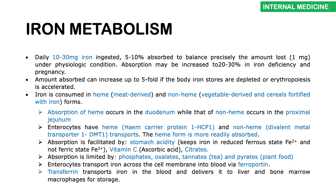Before going into further details, let's talk about iron metabolism. About 10 to 30 milligrams of iron are ingested per day, and about 5 to 10 percent of this is absorbed, with very little lost — about 1 milligram. Aside from females with menses, men have virtually no way of excreting iron. Absorption increases to about 20 to 30 percent in those with iron deficiency and in pregnancy, and can increase up to fivefold in patients with iron depletion or accelerated erythropoiesis.